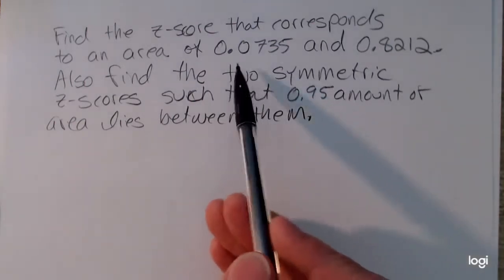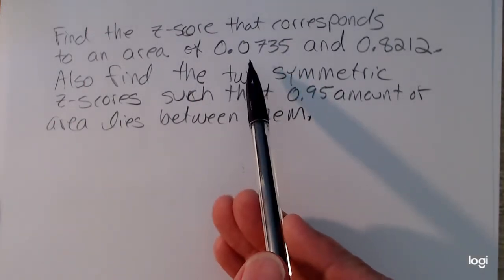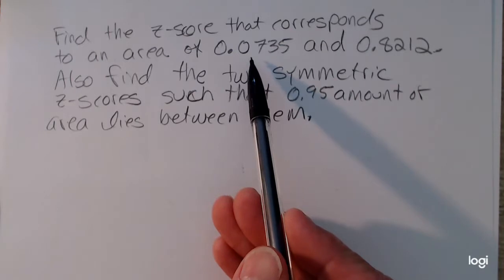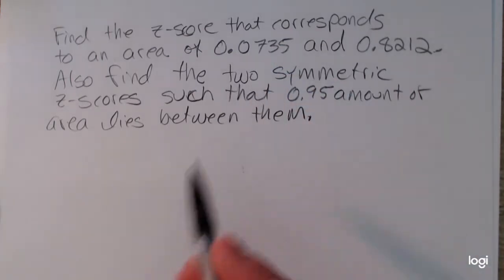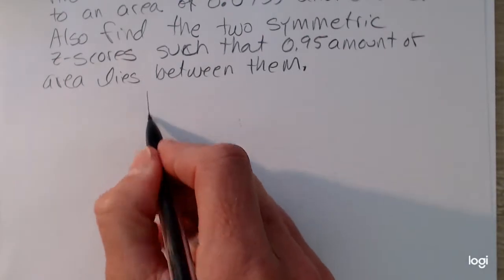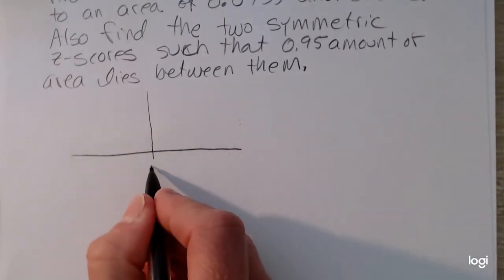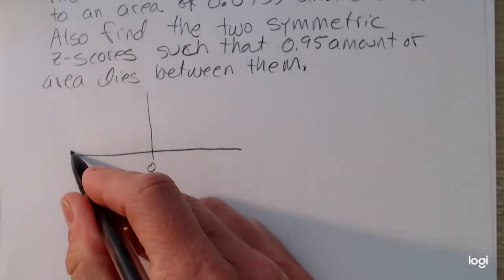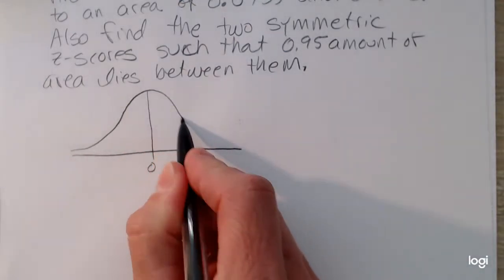So for this first part, I'm given a cumulative area of 0.0735. So I want to sketch what's given. The 0.0735 is not a z-score. It's a cumulative area.